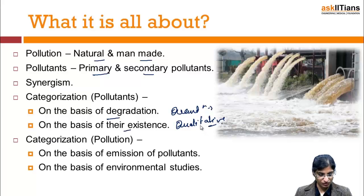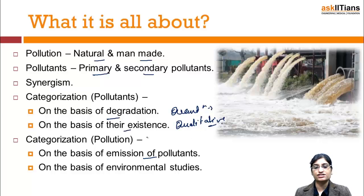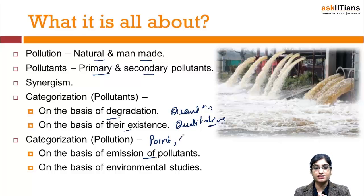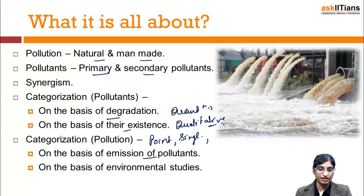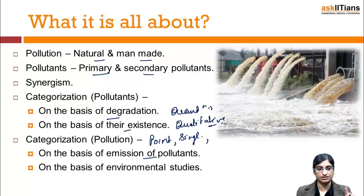Next is the categorization of pollution on the basis of emission of pollutants. First is point source, meaning a single point — like a chimney. Next is line source, such as a road with automobiles. Then there is area source pollution, covering a particular area like a mining area or industrial area. Finally, diffuse source pollution covers a large area.